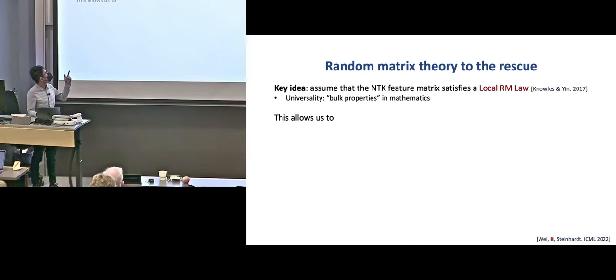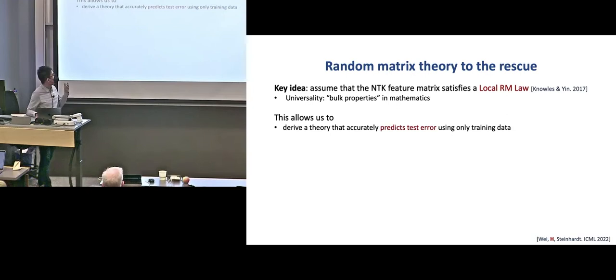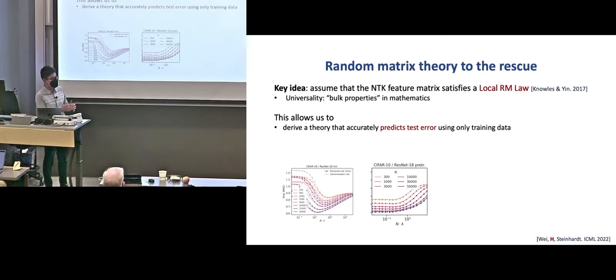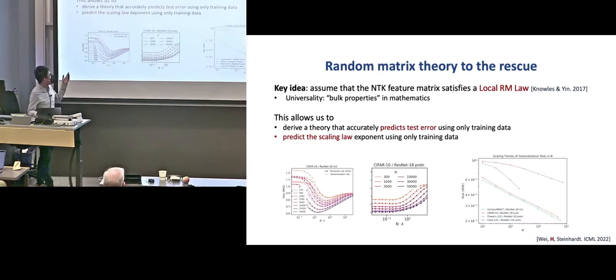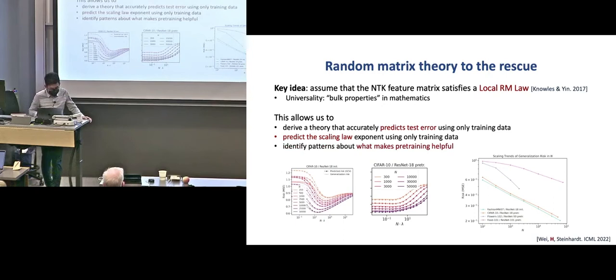So with this assumption, we can make use of it to do a lot of things. So for example, we derive a theory that accurately predicts the test error using only the training data. So we only look at the training data, and we are able to very accurately predict what is the test error, so much better than the classical theories that I mentioned in the previous slide. We also can predict the scaling law exponent also using only the training data, and finally, we identify some patterns about what makes pre-training helpful. Like we find a consistent pattern in terms of the difference between pre-training and random initialization.